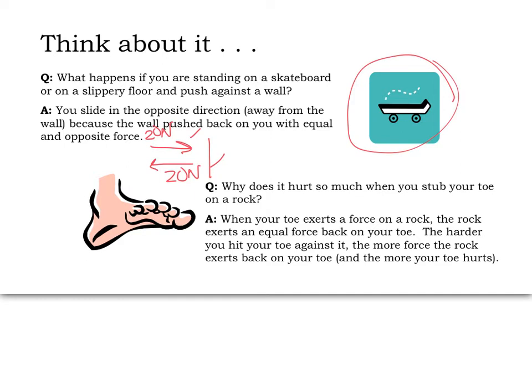Why does it hurt when you stub your toe on a rock? Your toe is throbbing, ouch. But why? Well, the amount of force you put on the rock is the same amount of force that the rock exerts back onto your toe. Therefore, the harder you hit your toe against it, the more force the rock is actually going to put back onto your toe. Obviously, the more force on your toe, the more it hurts. It's as simple as that.